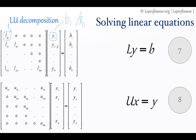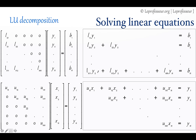Now notice y₂: it is simply L₂₁ multiplied by y₁ plus L₂₂ multiplied by y₂. You already know y₁ from the first step, so you substitute the value of y₁ to calculate y₂. How easy is that? You don't have to calculate the inverse of a matrix. And in the same way, once we have the y variables, we can calculate the x variables.